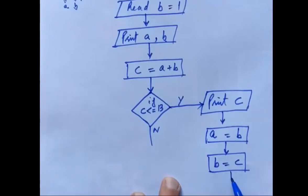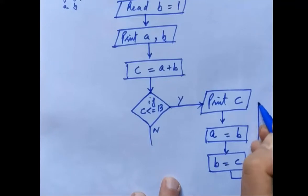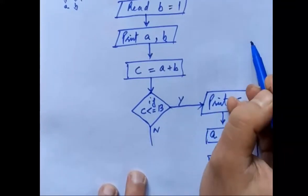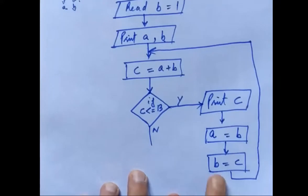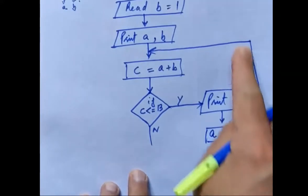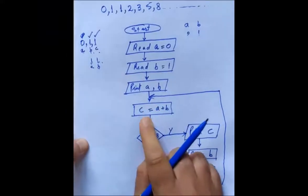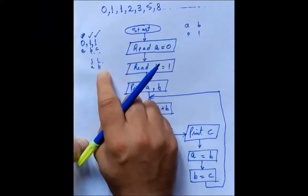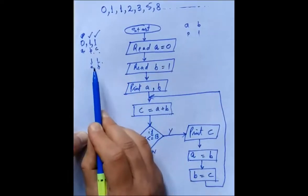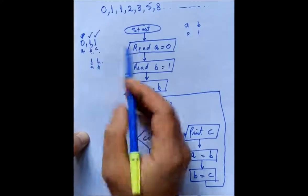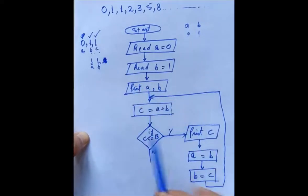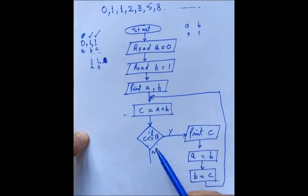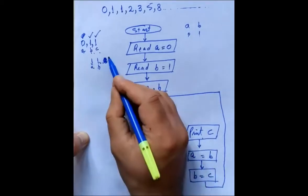Then we have to repeat the whole process from the step c equals a plus b, because now a equals b and b equals c. Again, c will be the sum of the new a and b: c equals a plus b, so c will be 1 plus 1 equals 2. If c is less than or equal to 13 — yes, 2 is less than or equal to 13 — so 2 will get printed.